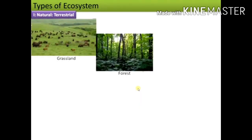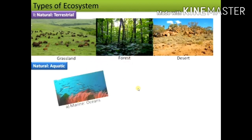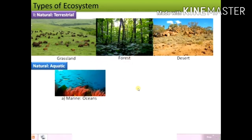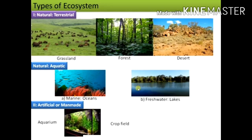There are two types of ecosystem: natural and artificial. Natural ecosystems can further be terrestrial ecosystems like grassland, forest, and desert. Aquatic ecosystems can be marine ecosystems, for example, oceans, or freshwater ecosystems like lakes. Artificial ecosystems include aquarium and crop fields.